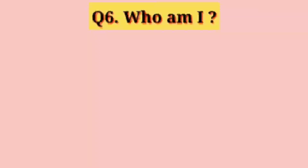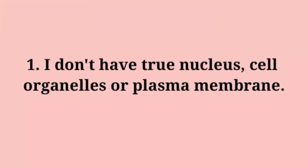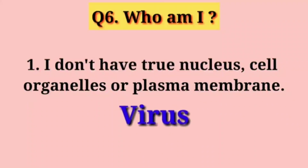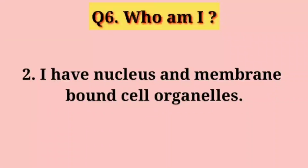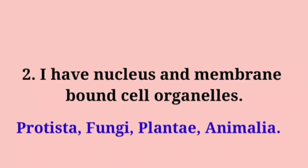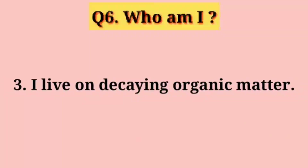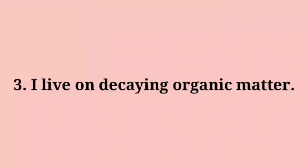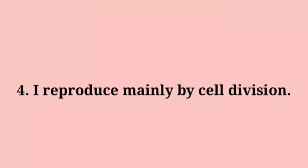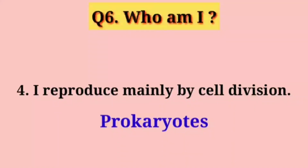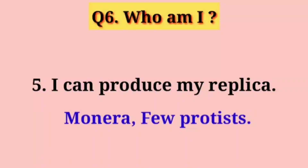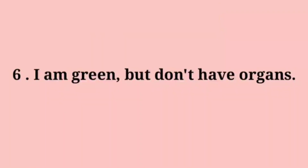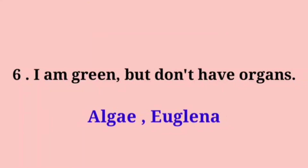Question 6: Who am I? — I don't have a true nucleus, cell organelles, or plasma membrane: Virus. — I have a nucleus and membrane-bound cell organelles: Protista, Fungi, Plantae, Animalia. — I live on decaying organic matter: Fungi, Bacteria. — I reproduce mainly by cell division: Prokaryotes. — I can produce my replica: Monera, few Protists. — I am green but don't have organs: Algae, Euglena.